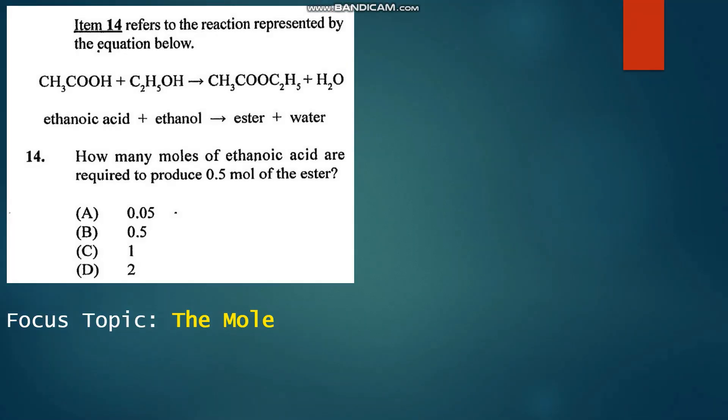Number 14: Item 14 refers to the reaction represented by the equation below. We have ethanoic acid plus ethanol giving an ester plus water. How many moles of ethanoic acid are required to produce 0.5 moles of the ester? The mole ratio is one to one. One mole of ethanoic acid produces one mole of the ester. Therefore, 0.5 moles of ester would have to be produced by 0.5 moles of the acid. So that's B.